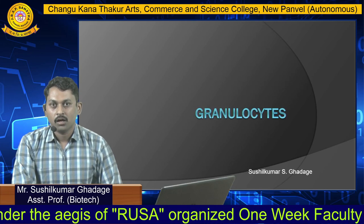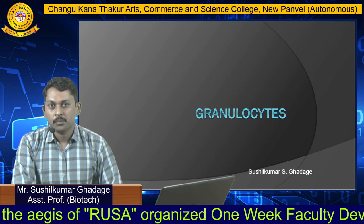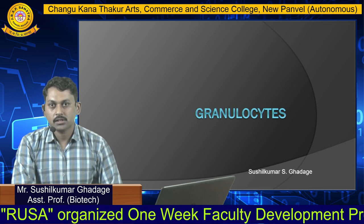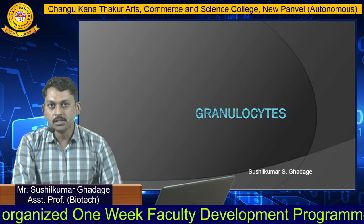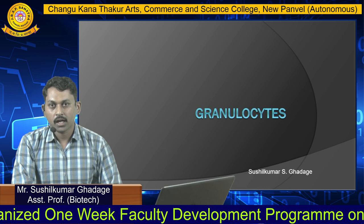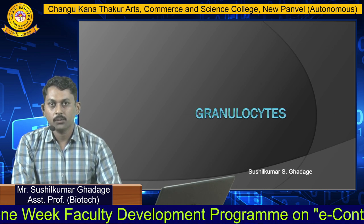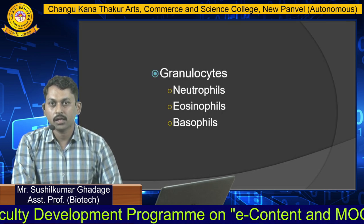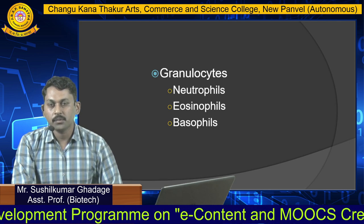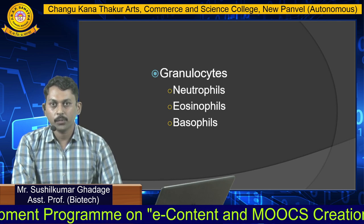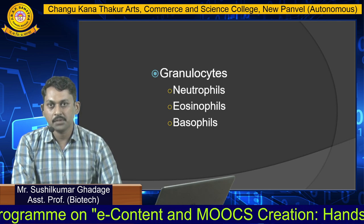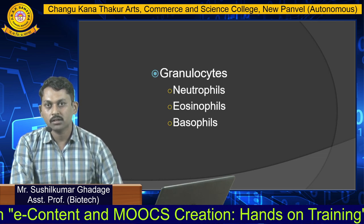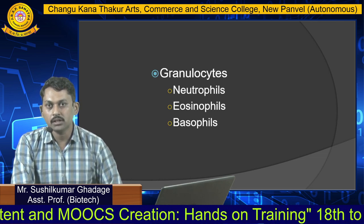Hello friends, my name is Sushumar Ghadge. Today we are going to discuss granulocytes. Granulocytes are one of the important WBC cells. They contain granules in their cytoplasm and are divided into three different types: neutrophil, eosinophil, and basophil.